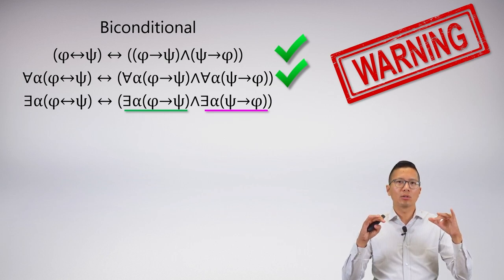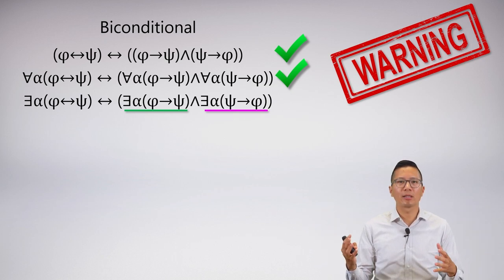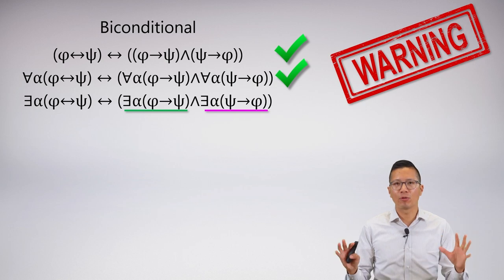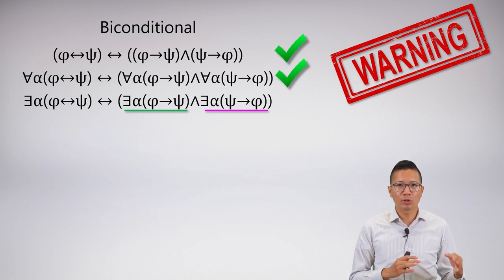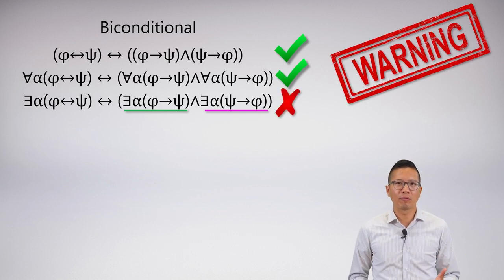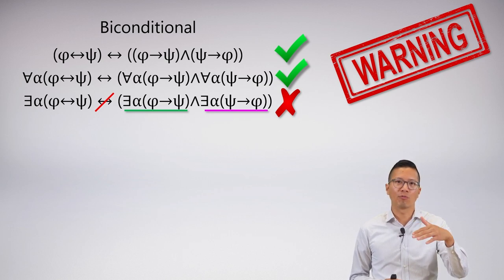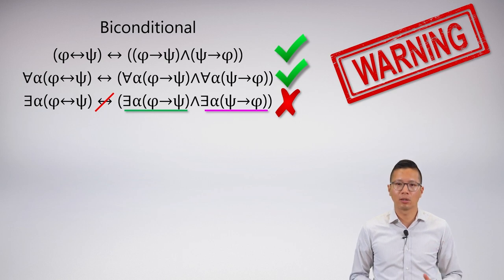But those two things could be different. One could be a rock and one could be a paper airplane or something like that. We have no idea if they're the same thing. And if you look on the left side of the biconditional, it is asserting that it is the same thing. So these are actually not logically equivalent, even though you might think you can do it because of the previous forms of the biconditional. So you've got to be careful in this particular case.